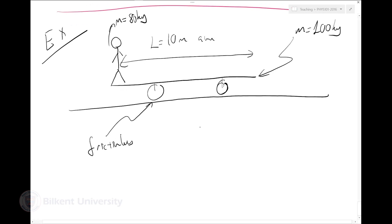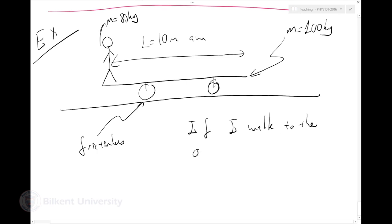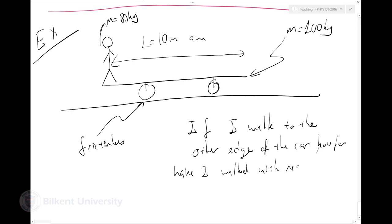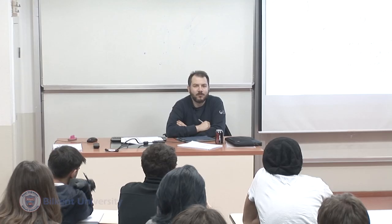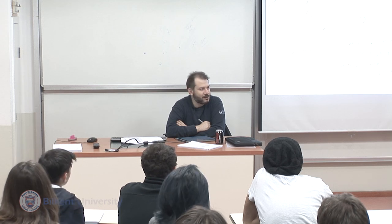The question is: if I walk to the other edge of the car, how far will I have walked with respect to the ground? Now, if the train car was not moving at all, I would have walked 10 meters — the whole distance — with respect to the ground.